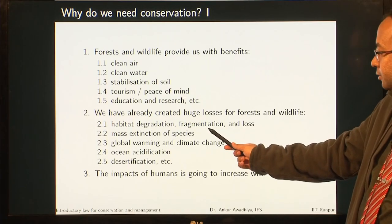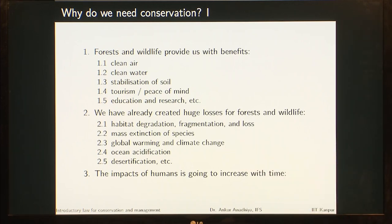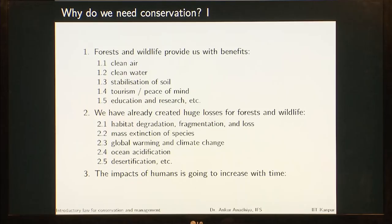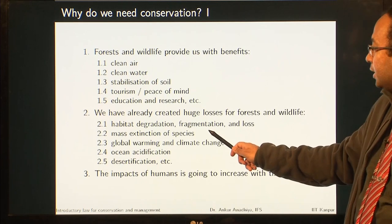Habitat degradation occurs because of things such as pollution, ghost nets, or forest fires. Then we have habitat fragmentation, where we divide a large-sized habitat into very small chunks. For example, if a road goes through a large forest, it divides the forest into two smaller chunks. For animals such as the tiger or the elephant, which require large areas, breaking up habitats into smaller fragments means animals cannot use either fragment — threatening the species and pushing it towards local extinction.